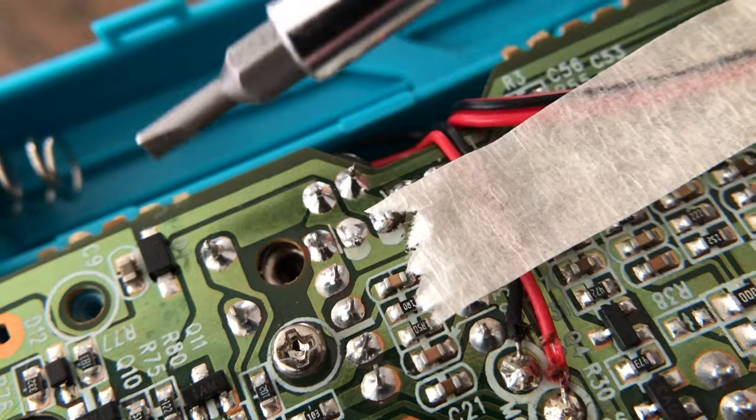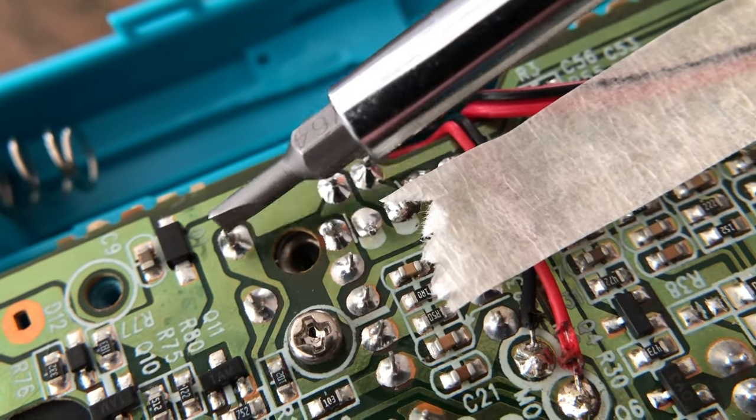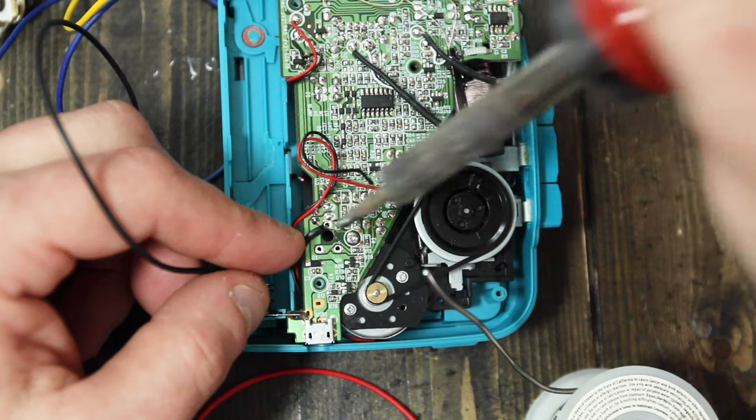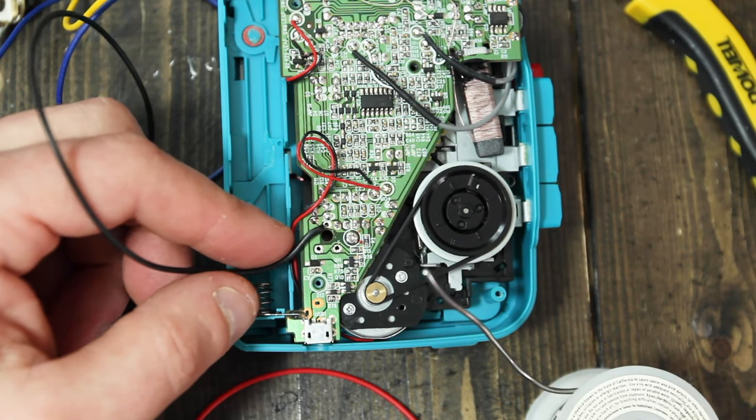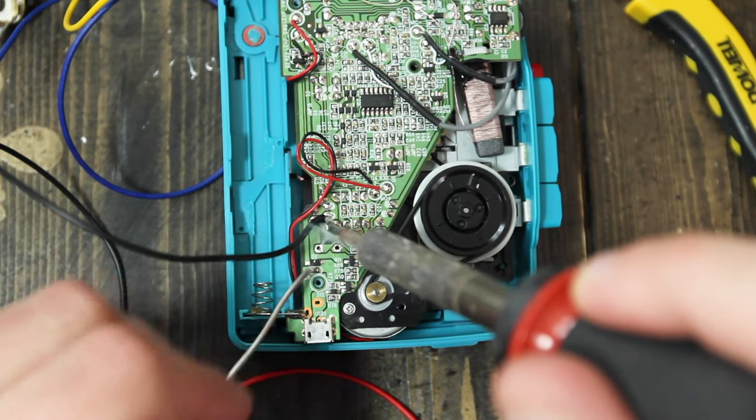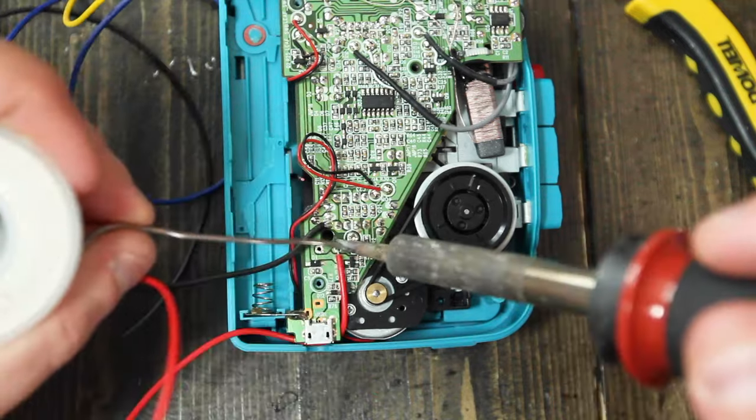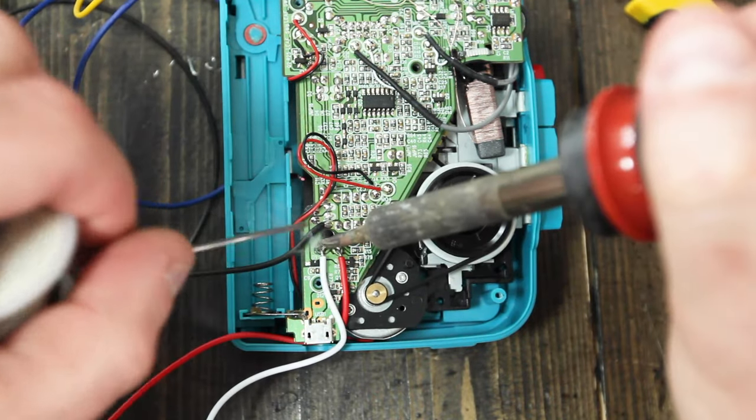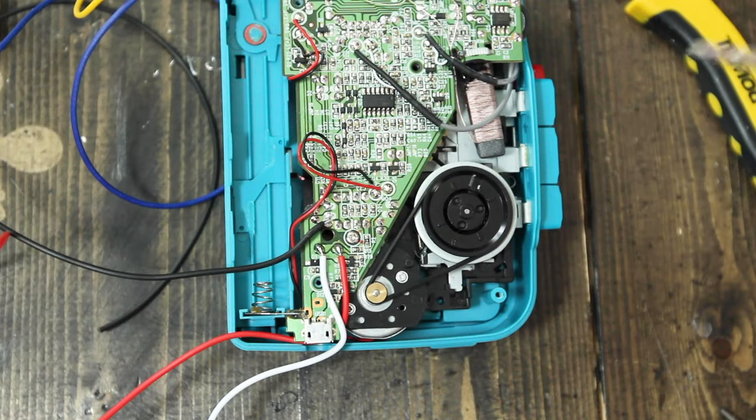Next, we'll connect wires to the speed control points. Here, I'm using black for the ground and red and white for the side terminals. The colors I choose are arbitrary, by the way. They don't represent the flow of electricity. Just as long as each of them are a different color, it's easy to know which is which when you're soldering them into the case.